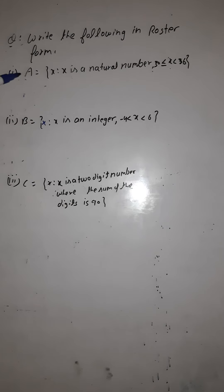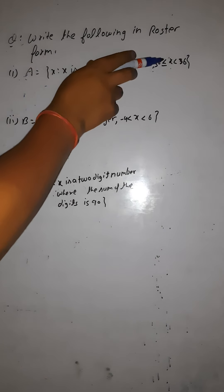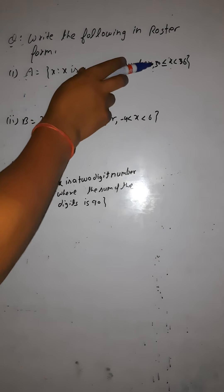The first question: set A contains the element X such that X is a natural number and X is greater than or equal to 30 but less than 36. So the elements would start from 30: 30, 31, 32, 33, 34, 35. We cannot take 36 because X must be less than 36. This is how you write it in roster form.